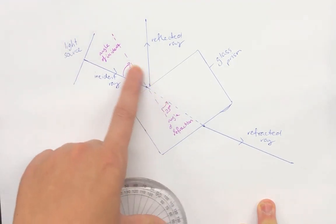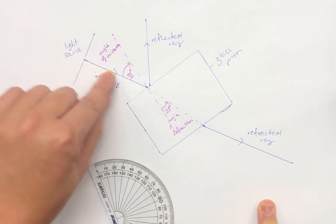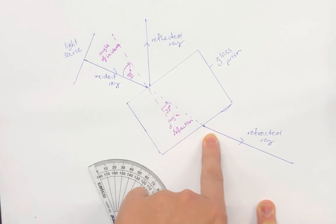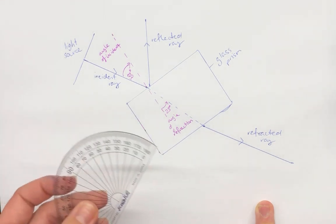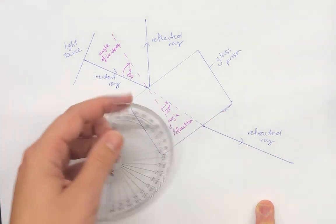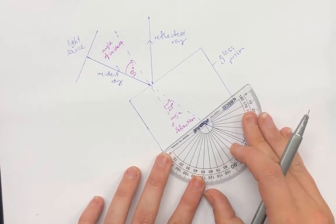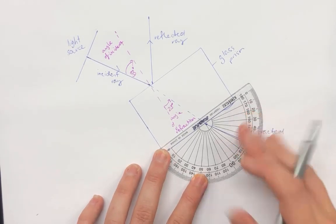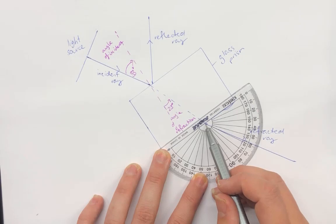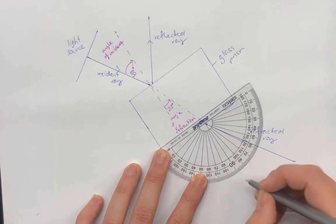Now we can also look at it when the light is exiting as well. Again, the normal is at 90 degrees to the medium. I'm going to set up my protractor right at the point where the refracted ray exits the medium this time. And I'm going to mark my 90 degrees.